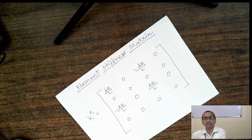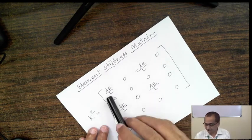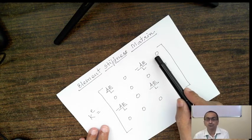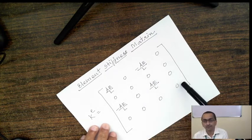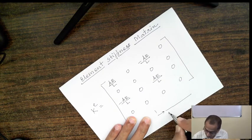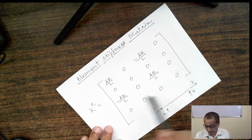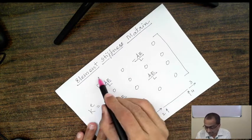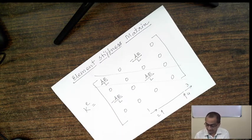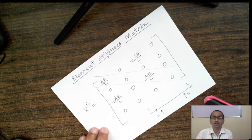Let us check whether this stiffness matrix satisfies all required conditions. First, it is a square matrix — 4 rows and 4 columns. Second, the order of the stiffness matrix equals the degree of kinematic indeterminacy of the truss element, which is 4, so the order 4×4 is correct. Third, all diagonal elements are positive (or zero) — satisfied. Fourth, the off-diagonal elements are symmetrical — satisfied. So this matrix satisfies all properties of stiffness matrices.